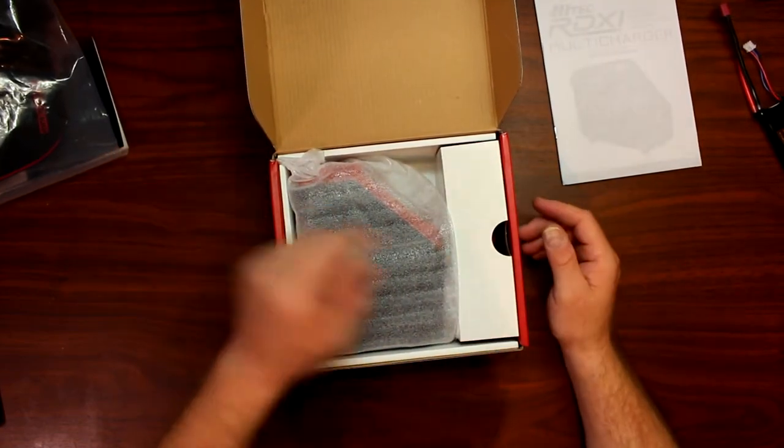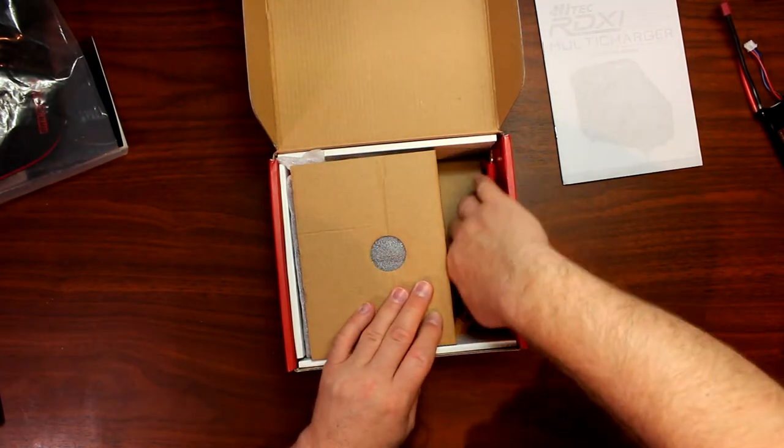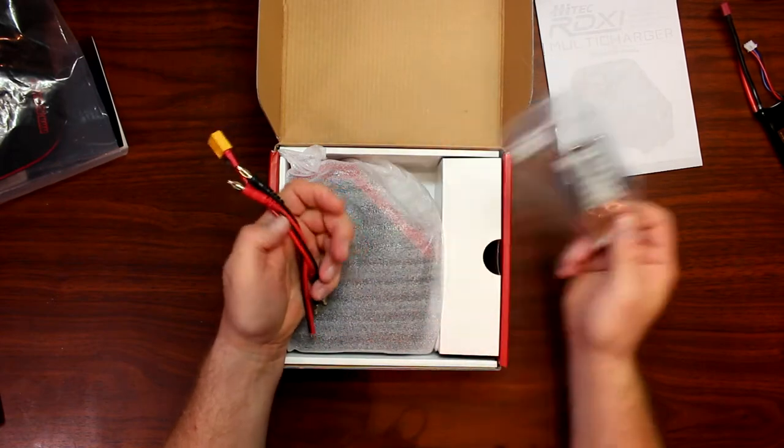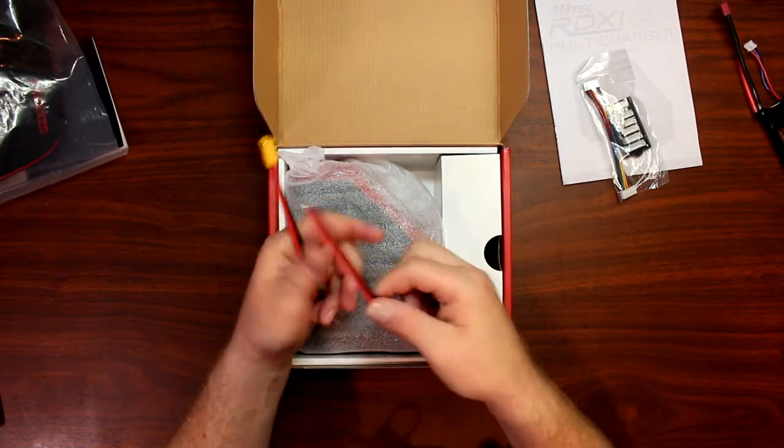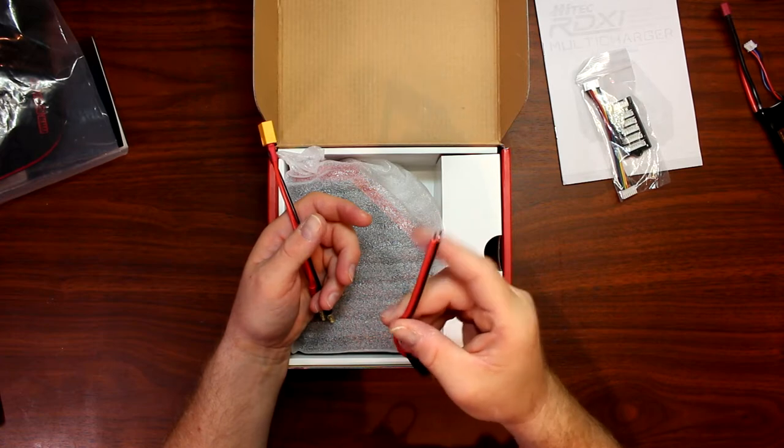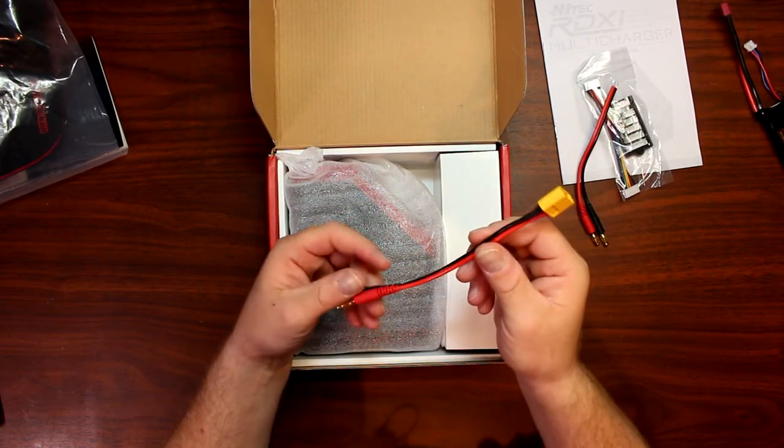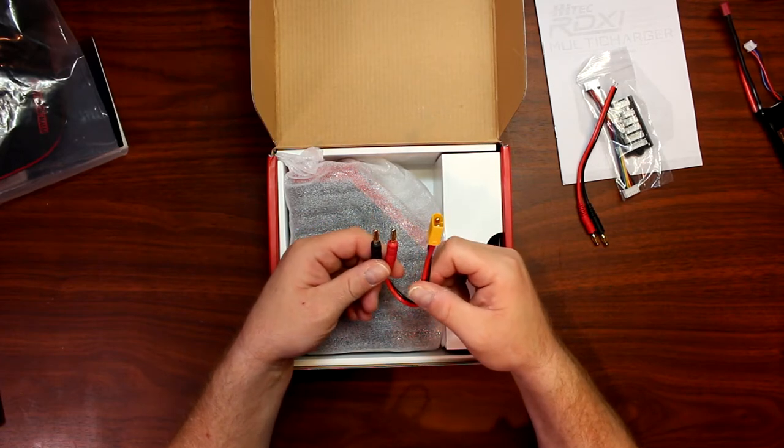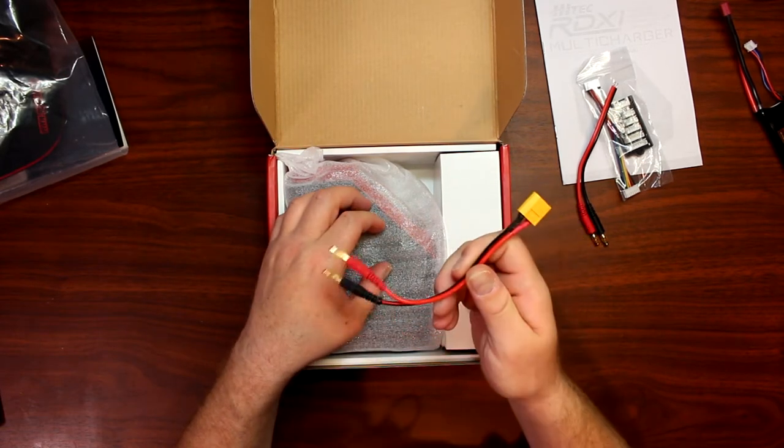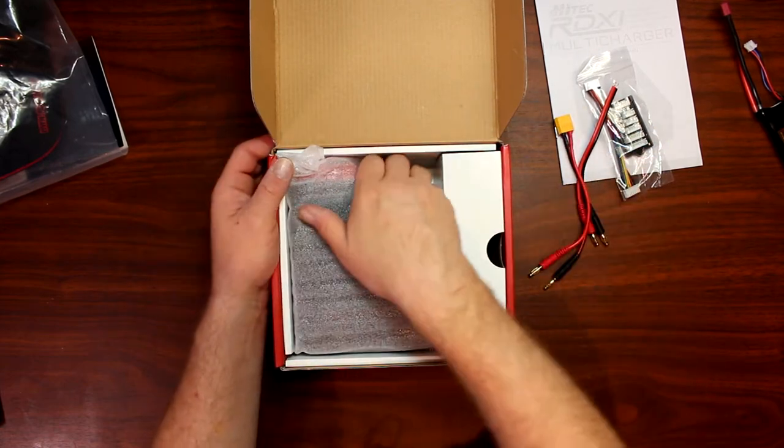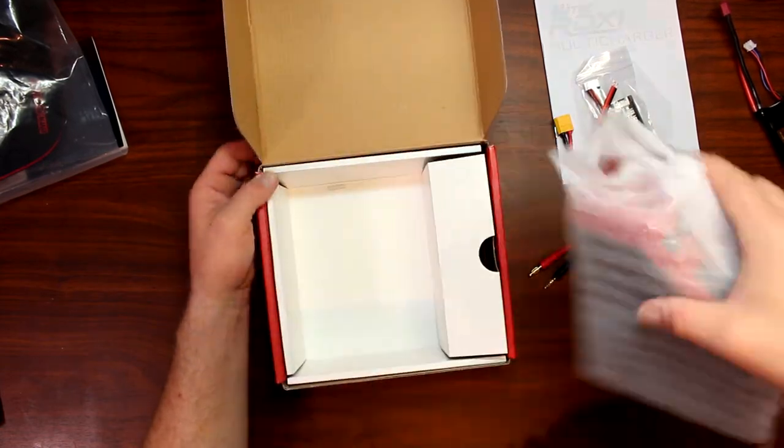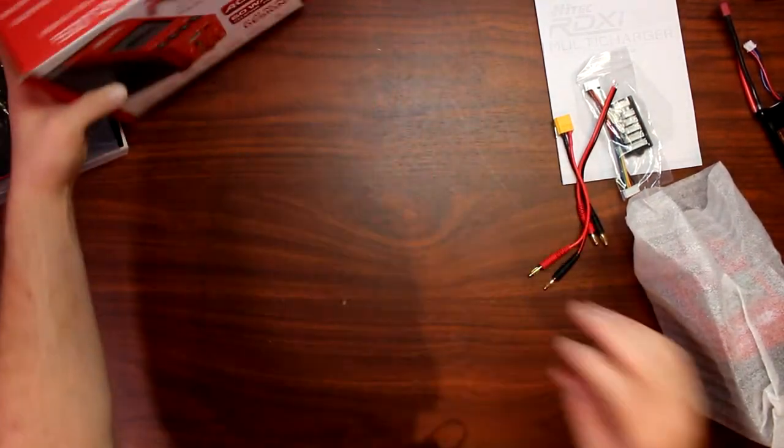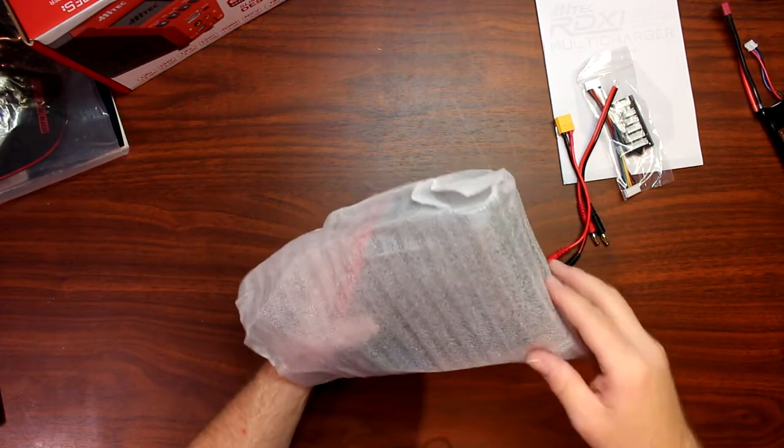Looking in the box, we'll see what kind of connections they give us. You have a balancing board, a spare charging lead that you can put whatever you want at the end, and you have an XT60. This XT60 is to be able to use your charger on a DC charger. I'll show you where you plug in in a second. Let's take this charger out of the box and unwrap this bad boy.